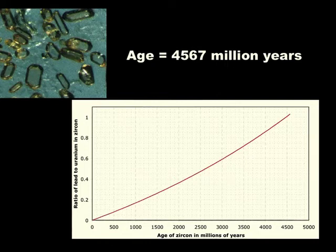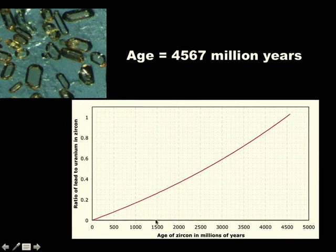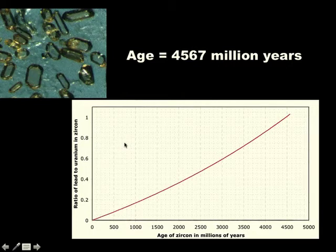Through time, the ratio of lead to uranium increases. The older it is, the more lead and the less uranium. Going back 4,500 million years or so, the ratio is one to one. So if something's as old as this — 4,500 million years — the ratio will be one to one.